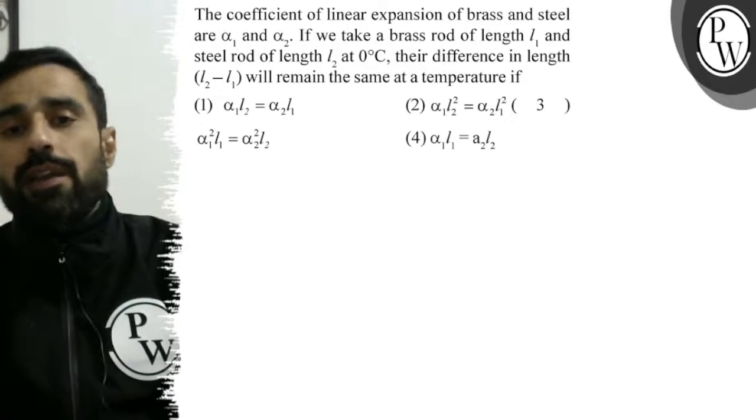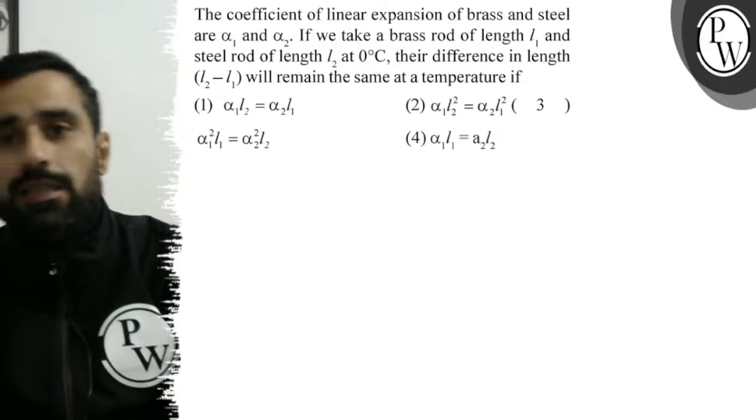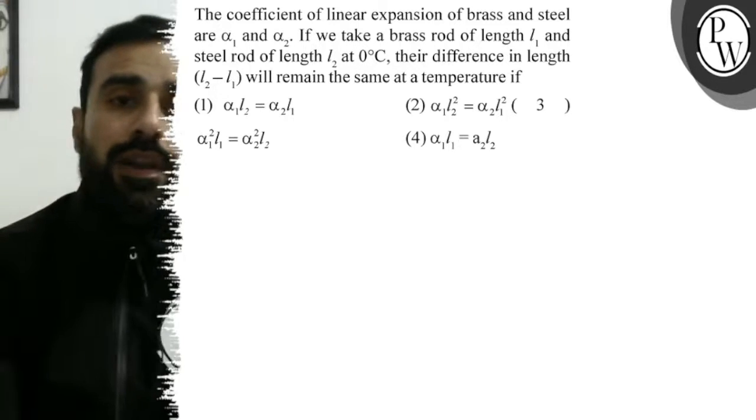The question is: the coefficient of linear expansion of brass and steel are alpha 1 and alpha 2.